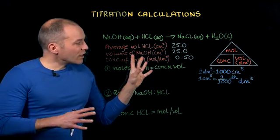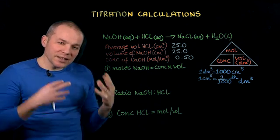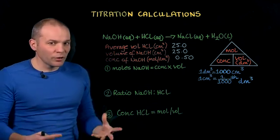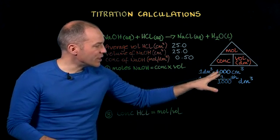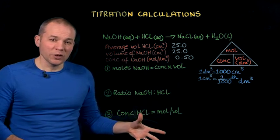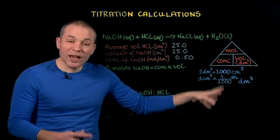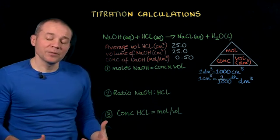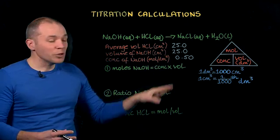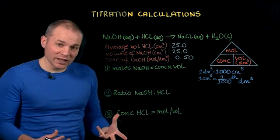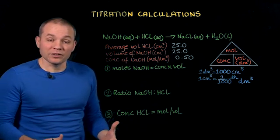This is only slightly complicated by the fact that we're using decimetres cubed to measure volumes in these calculations, where one decimetre cubed is equal to a thousand centimetres cubed, and so one centimetre cubed equals a thousandth of a decimetre cubed. I need to convert my volumes in centimetres cubed into decimetres cubed for these calculations, and I do that by just dividing them by one thousand.